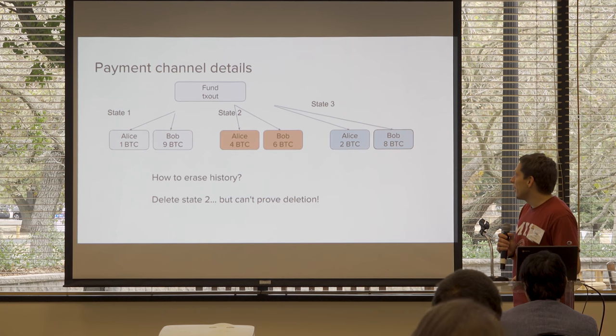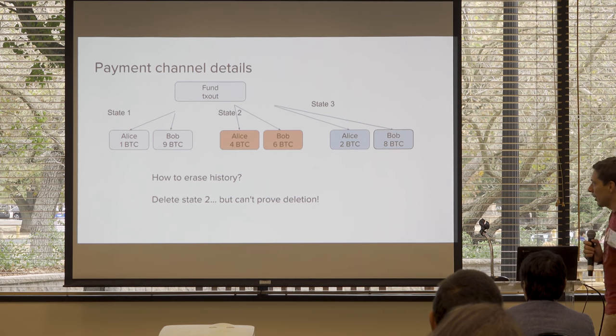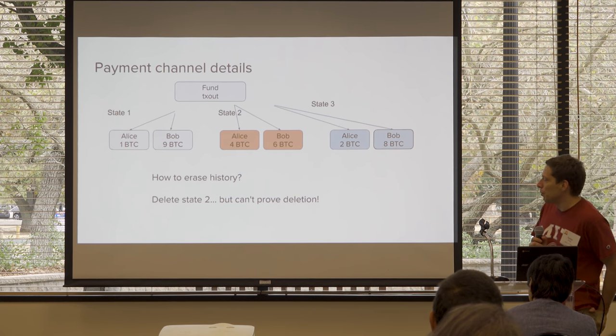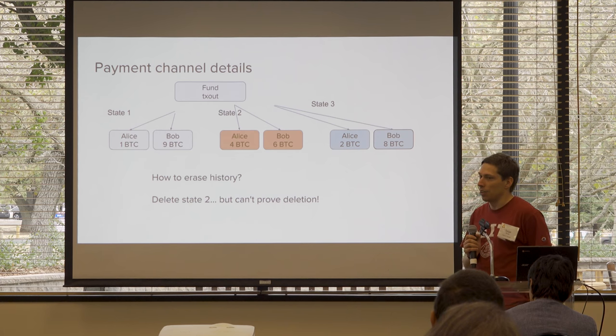The basic idea of the payment channel details: how do you actually enforce this? How do you erase the history? There are multiple different states agreed upon, but you really only want the most recent one to get onto the chain.